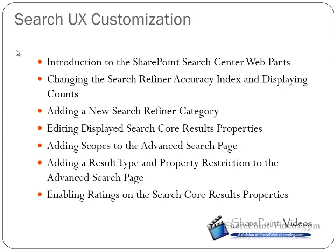Then we're going to jump into the front end of search. We're going to look at the search center web parts and how to configure various different things there — manipulating search refiners, increasing the accuracy index, displaying counts, and adding new search refiners. We'll look at how to edit the search core results properties, then dive into the advanced search page to add scopes, new result types, new property restrictions, and finally add ratings to the search core results web part.